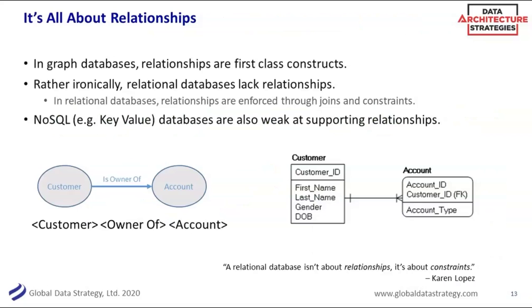For those of you who come from the relational world — and I think that's a lot of us — relational databases are still great. They're not going away. They just have their use case. But in a graph, the relationships are really first-class constructs. Even though we talk about relational databases, they really lack relationships in a first-order pattern. One of my colleagues and friends, Karen Lopez, said, 'The relational database really isn't about relationships — it's about constraints.' You're creating those keys and those patterns, but it's predefined and it really isn't about those flexible relationships.